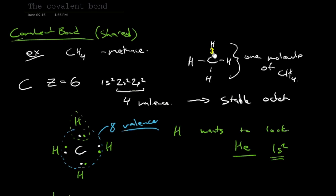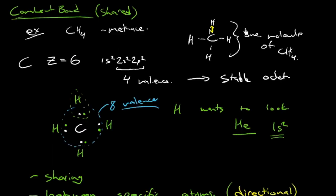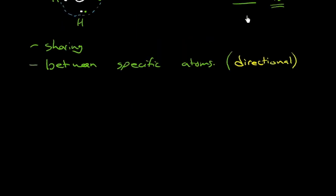And if I drew another methane, it's between specific atoms. So we've got carbon here with those hydrogens in one molecule of methane. And if I drew another molecule of methane here, there would be no covalent bond between this hydrogen and this one. That will be a secondary bond. We'll get to that later. But it's specific. And not only that, that will be an interesting contrast to the ionic bond, which we'll cover later.